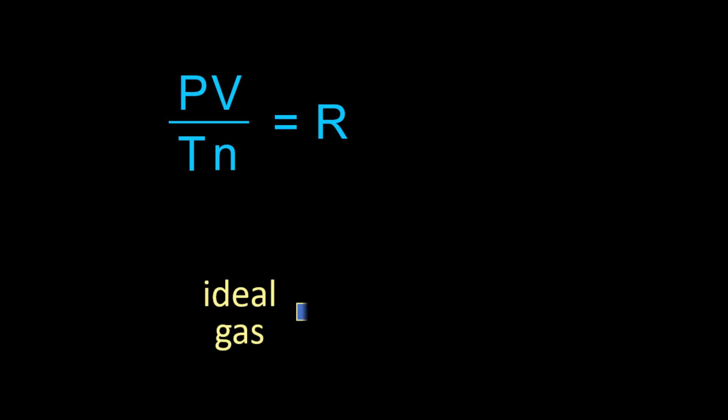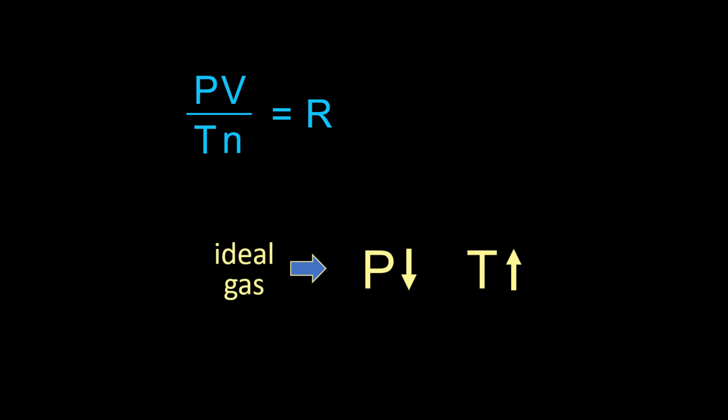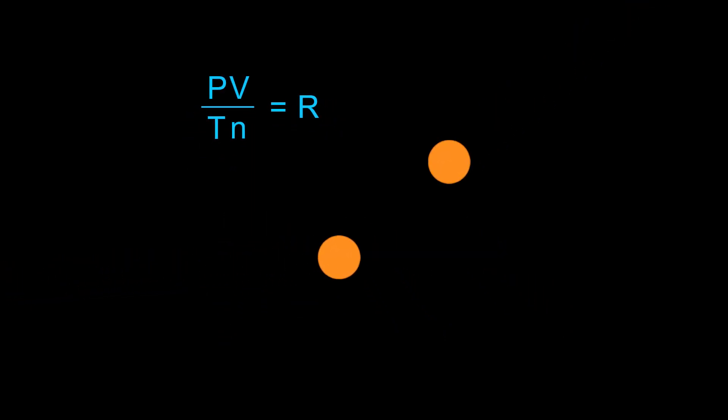An ideal gas is defined as a gas whose pressure is low enough and temperature is high enough so that gas particles are very far apart, meaning the size of any single particle is irrelevant and particles are moving fast enough so that any collision is perfectly elastic.